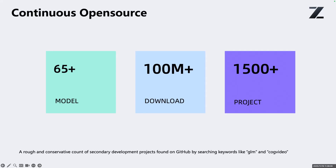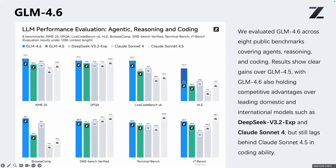Let's move to GLM 4.6. GLM 4.6 is our latest flagship model. On many public benchmarks, especially in math and coding, GLM 4.6 shows a clear gain over GLM 4.5. It also outperforms open source models released in the same period like DeepSeek R1, and even some commercial models such as Claude Sonnet 4 on several benchmarks. Of course, if we compare to Claude Code 4.5, there is still a noticeable gap — we are not claiming to beat everything — but we are getting closer and closer.